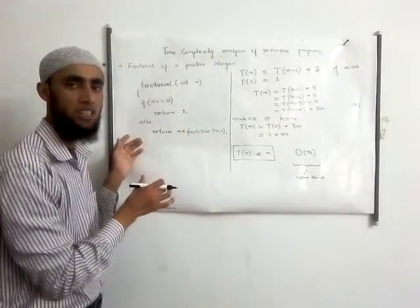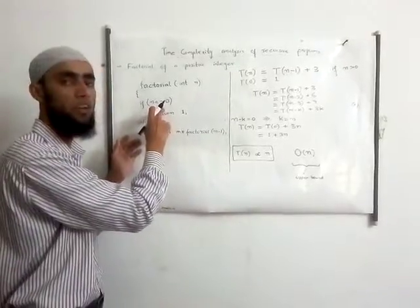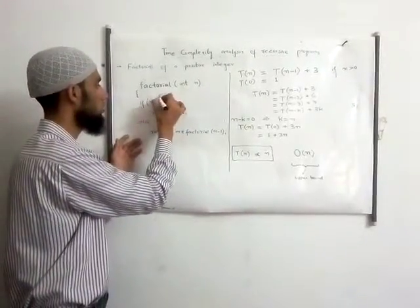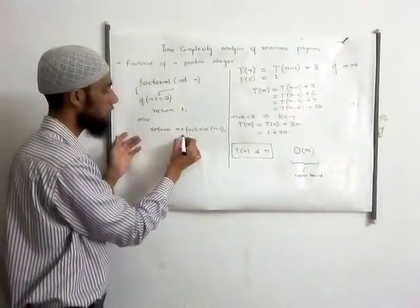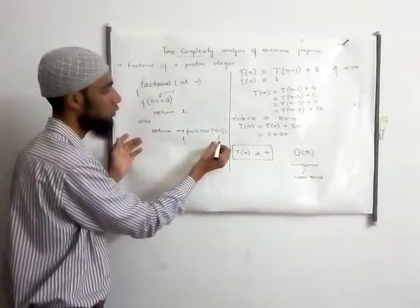We make an assumption that each simple operation will cost one unit of time. So this will cost one unit, this will also cost one unit, and this will also cost one unit.